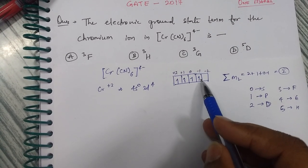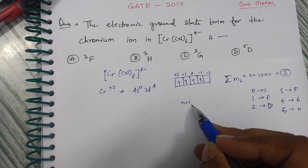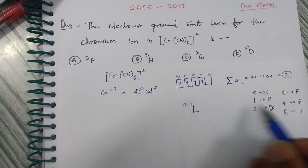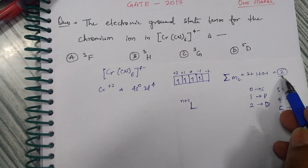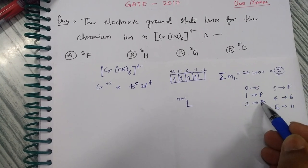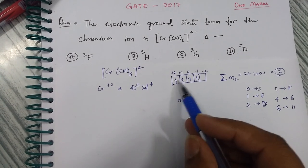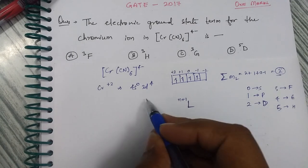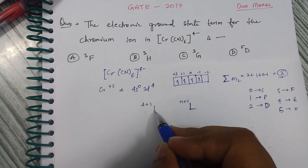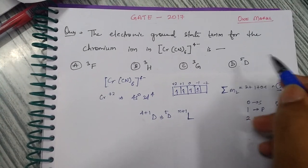There are 4 unpaired electrons, so the spin multiplicity is n+1 = 4+1 = 5. With L=2 giving the term letter D, we get ⁵D. So according to the standard method, ⁵D would appear to be the correct answer.